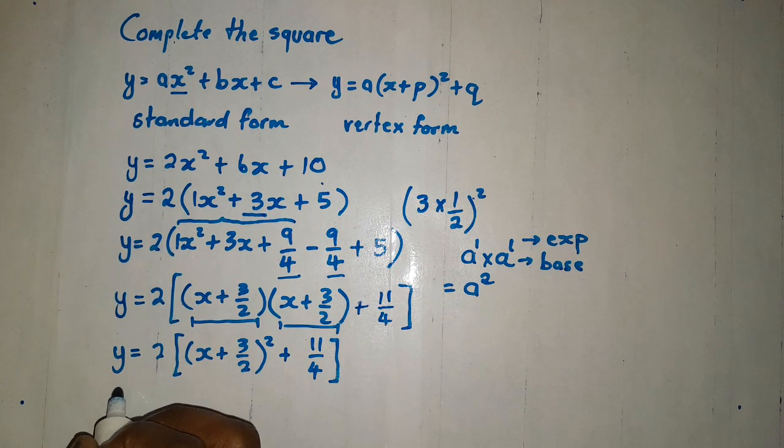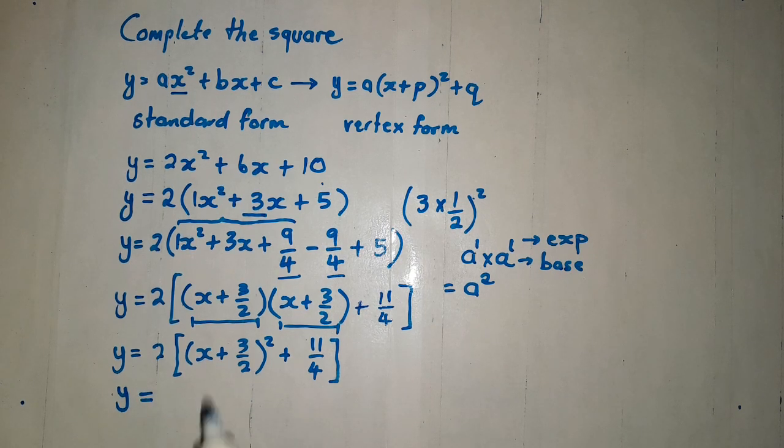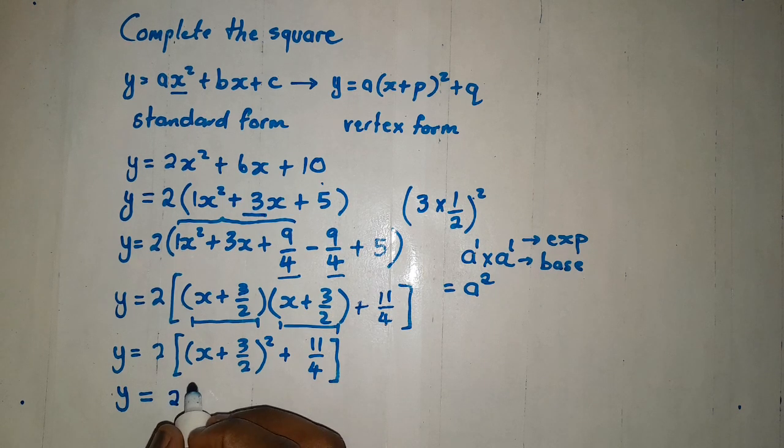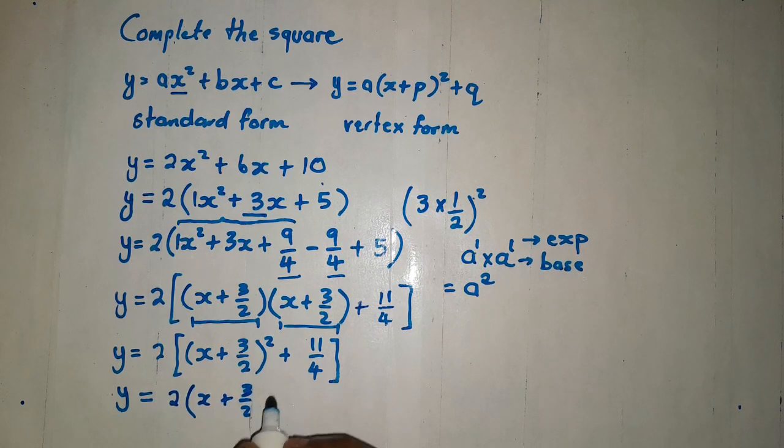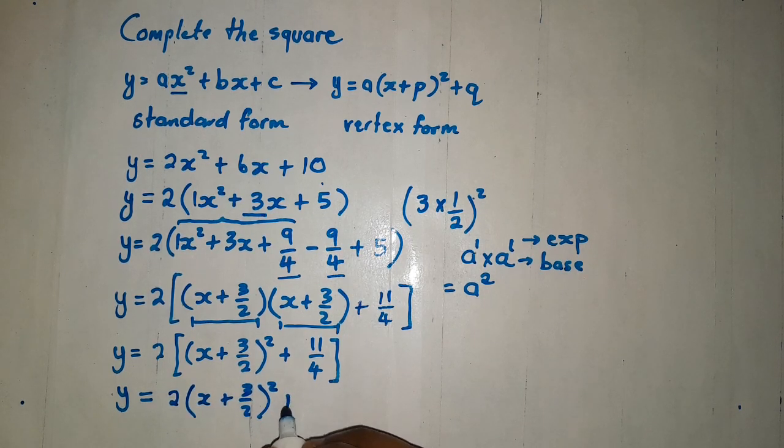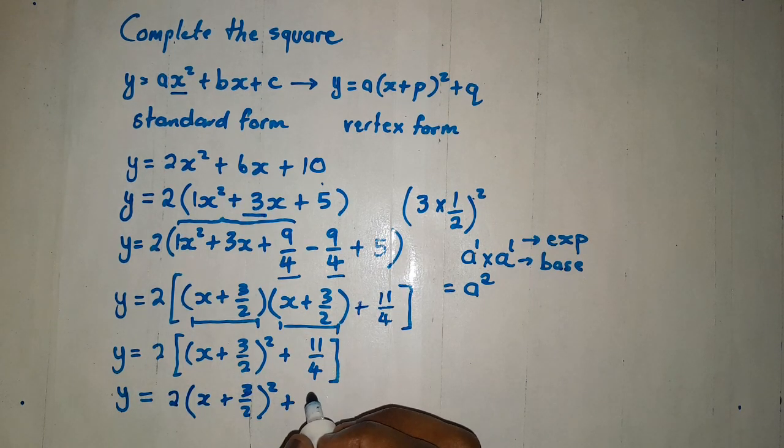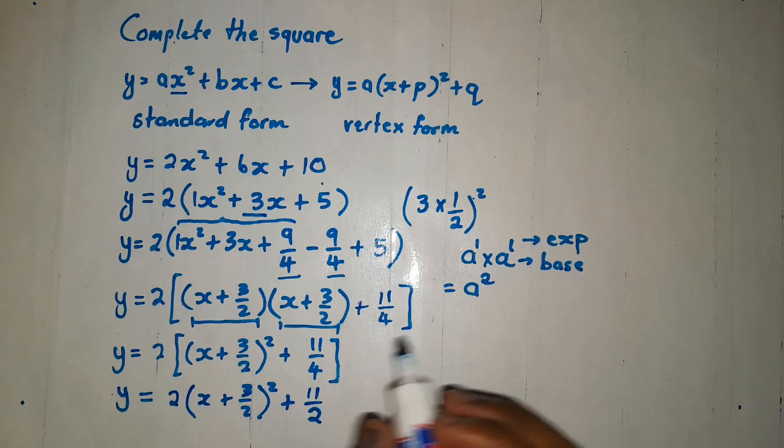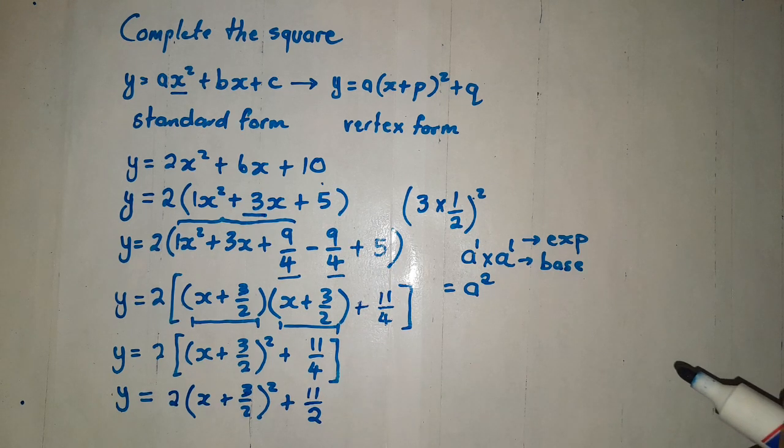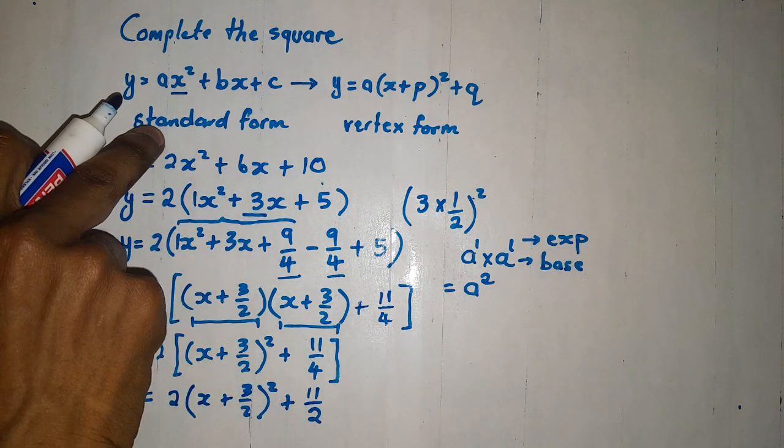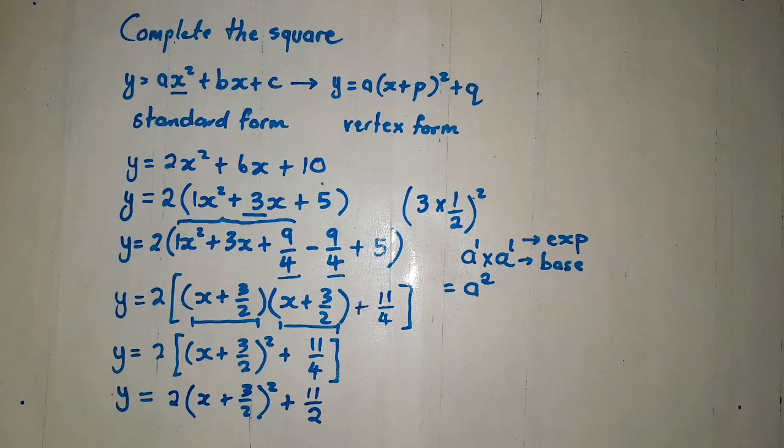Then, we are almost close to the answer. Let us multiply it throughout by these two. Then we are going to get 2 times x plus 3 over 2 close, plus. If we multiply this one with this one, you must get 11 over 2. At this point, we have managed to move from the standard form to the vertex form. It's so simple.